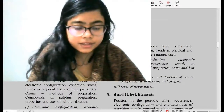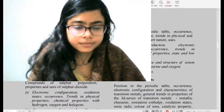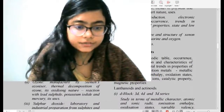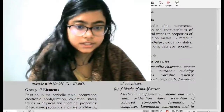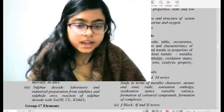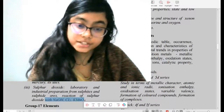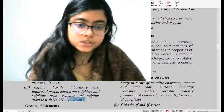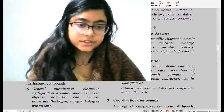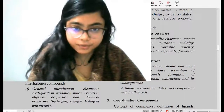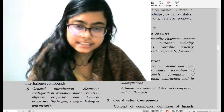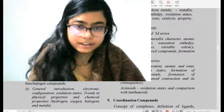For Group 16 elements: periodic table trends and explanation of their properties, electronic configuration. Reactions of ozone and sulfur dioxide — sulfur dioxide with sodium hydroxide, Cl₂ with KMnO₄ — don't miss sodium hydroxide and chlorine reactions, and sulfur dioxide reactions. These are very very important.